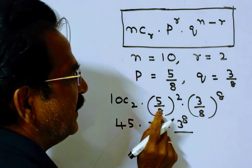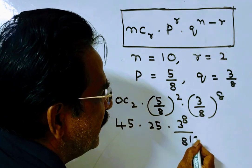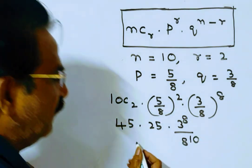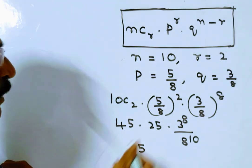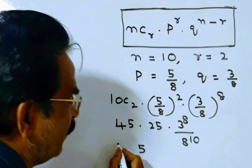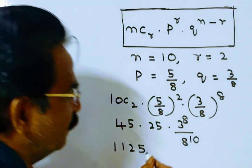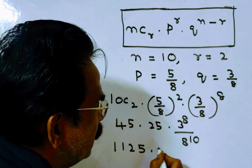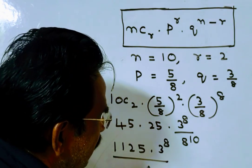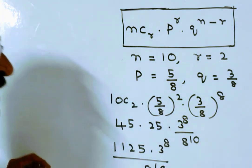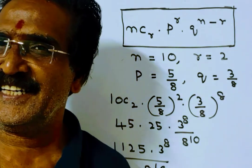So the final result is 1125 × 3^8 upon 8^10, and that is the required probability. Thank you, have a nice day.